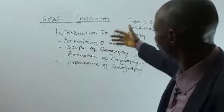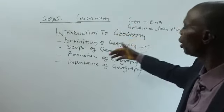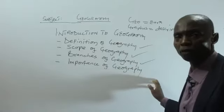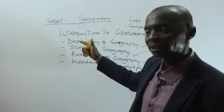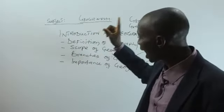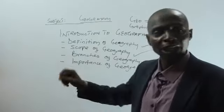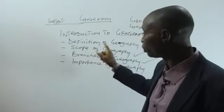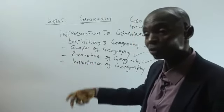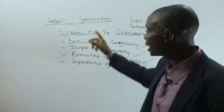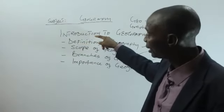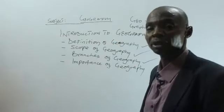So with this, we have come to the end of the first topic: introduction to geography. We have known the definition, the scope, the branches, and the importance of geography. At the end of each topic, students must assess themselves. There are questions for you to answer without looking at your textbook or any external materials — based on what has been explained, you are going to answer these questions as a self-assessment before we move to the next topic.